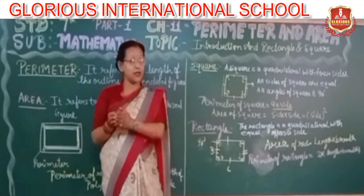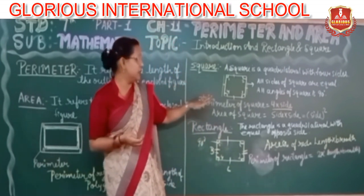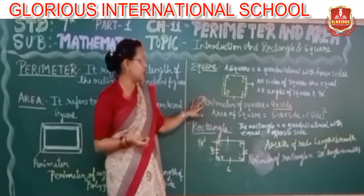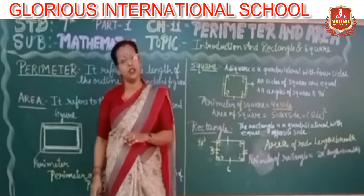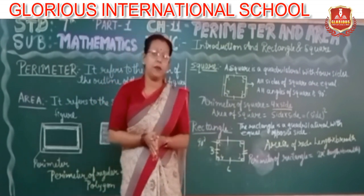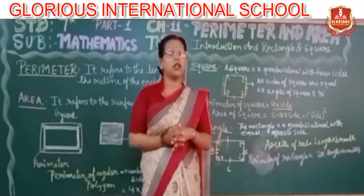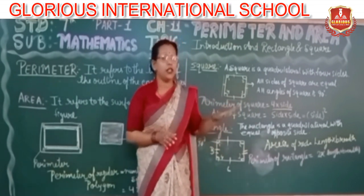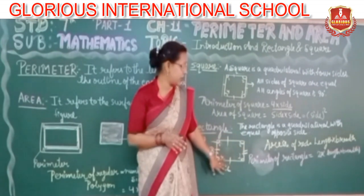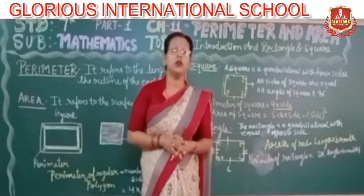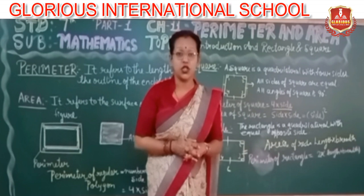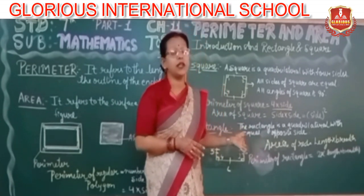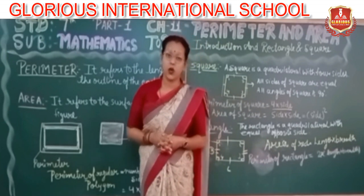So this covers the area and perimeter of the rectangle, and the perimeter and area of the square. I hope you all understand the concepts of perimeter and area. In our next video, we are going to solve the questions of Exercise 11.1, which will help you understand the area and perimeter of the square and rectangle in more detail.